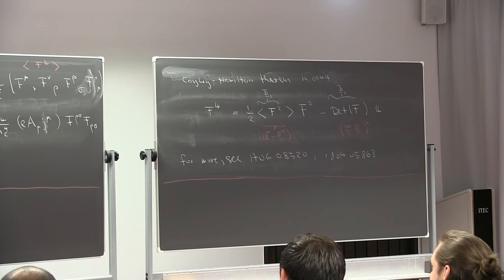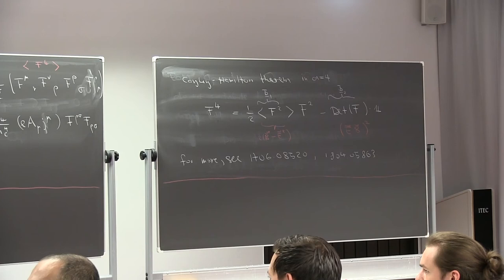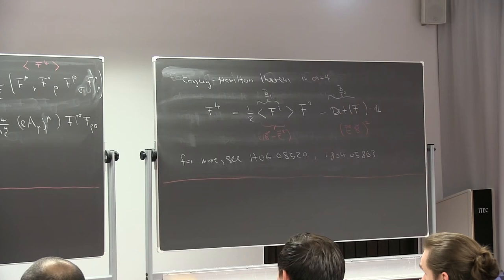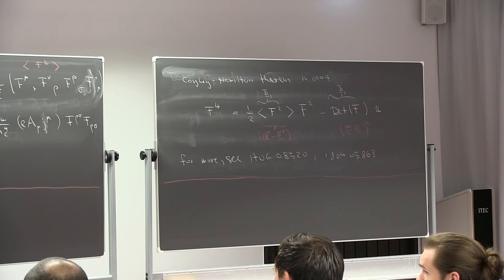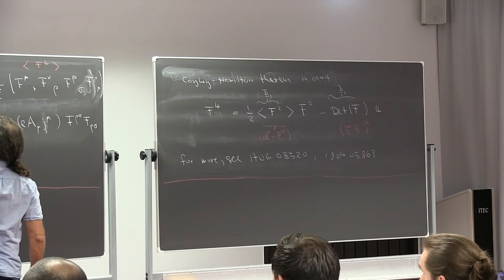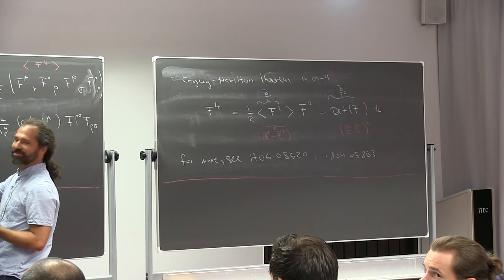A student asks about gauge invariance since the last two operators in L8 contain A^mu explicitly. Fortunately, D^mu applied to the current gives current conservation, so that's consistent. You can write it with the covariant derivative and it looks better. The gauge invariance is maintained if you use a conserved current.